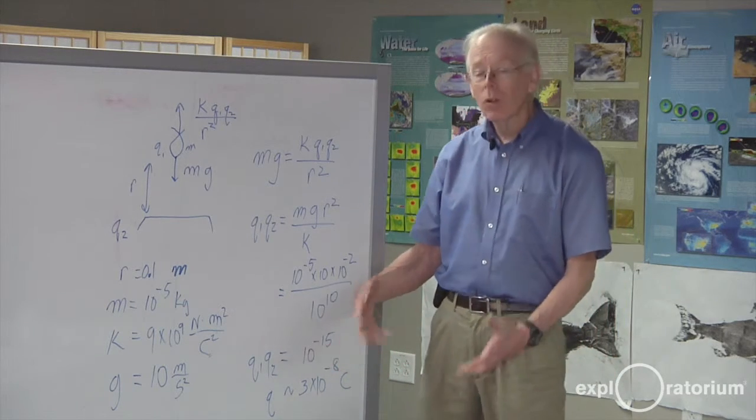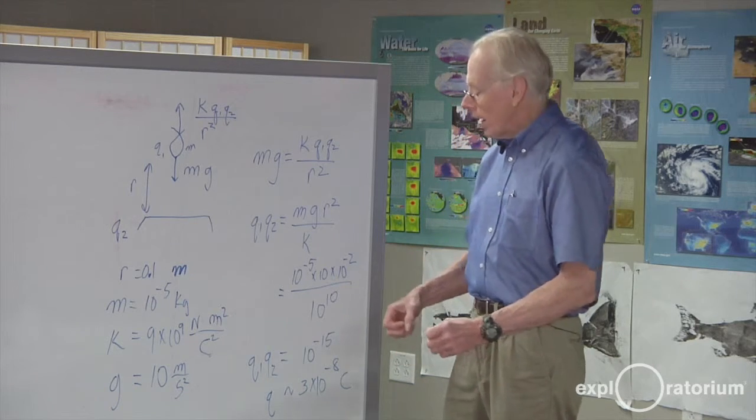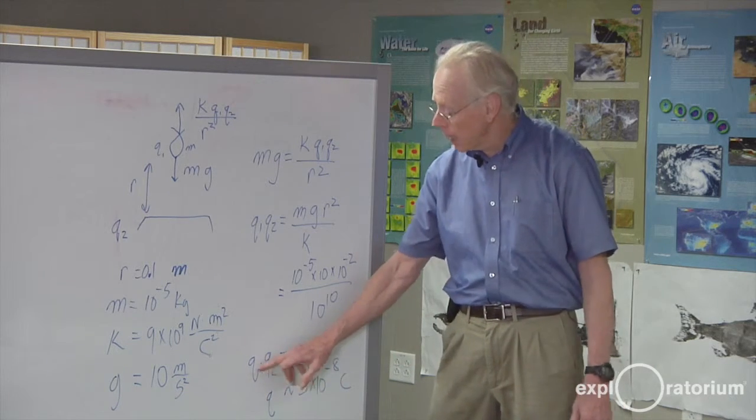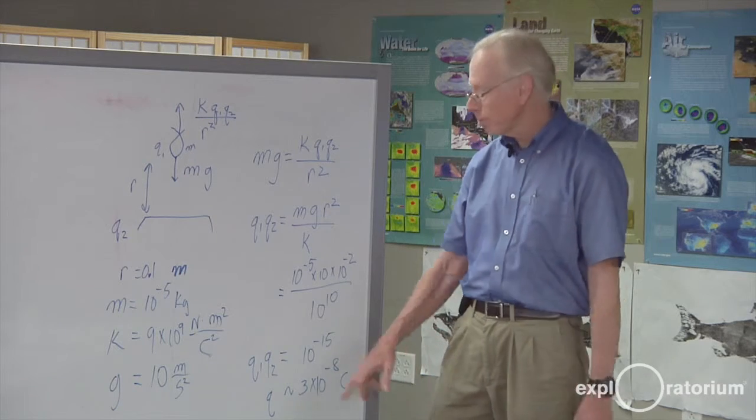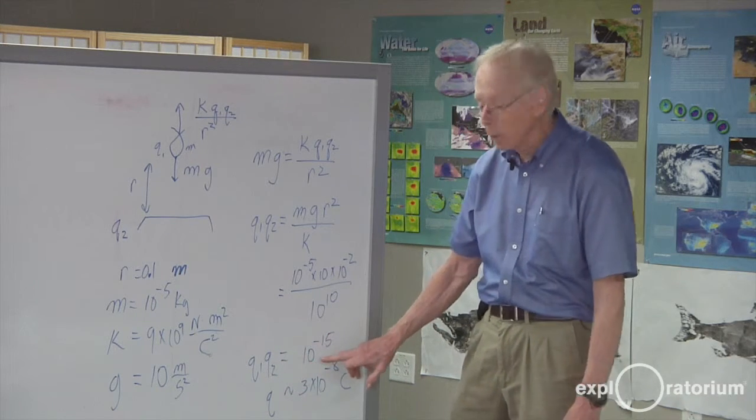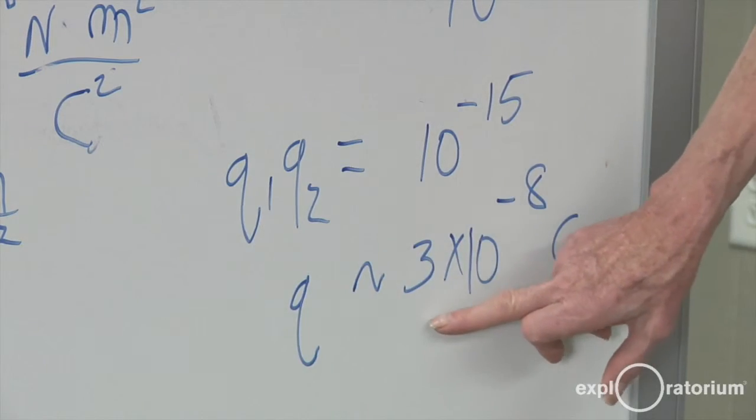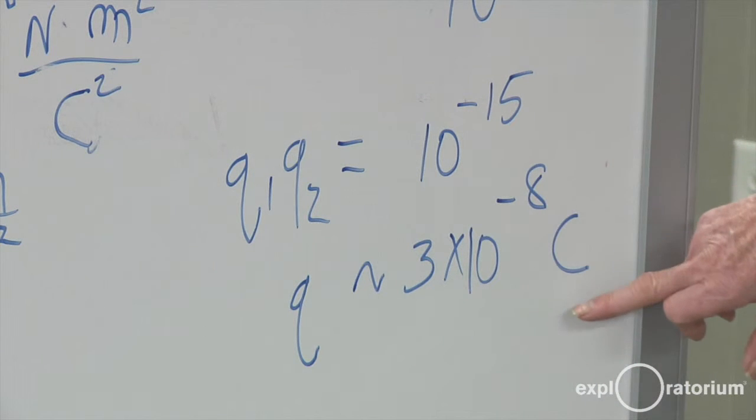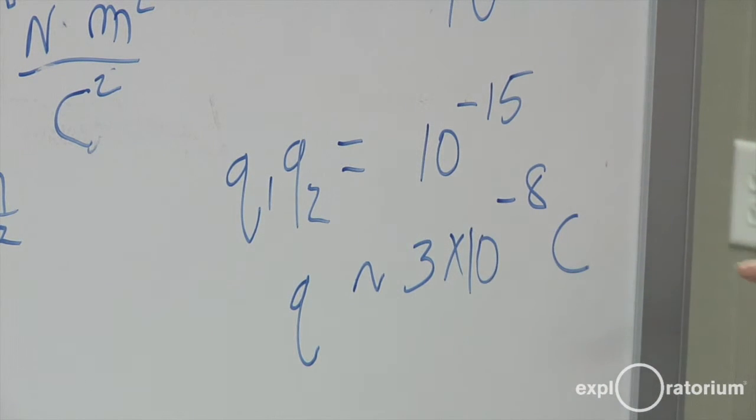But I don't know how the charge divides. So I just did an estimate. I thought maybe the two charges are roughly equal. And if they're equal I just take the square root of the right and I find we're dealing here with about three times ten to the minus eighth coulombs of electric charge.